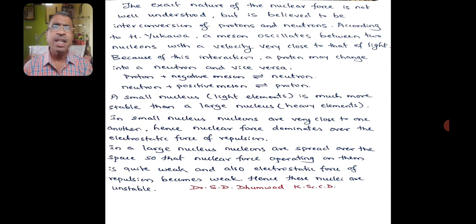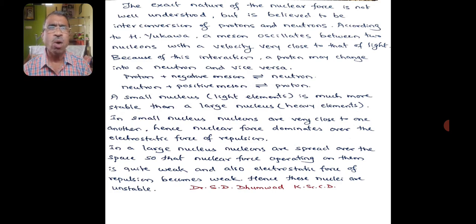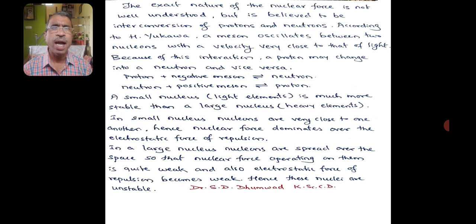The exact nature of the nuclear force is not well understood, but it is believed to be the interconversion of protons and neutrons. According to H. Yukawa, a meson oscillates between the two nucleons with a velocity very close to that of light. Because of this interaction, a proton may change into a neutron and vice versa.